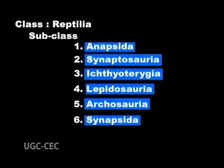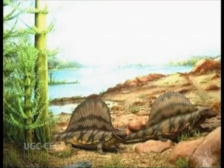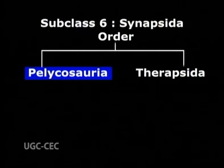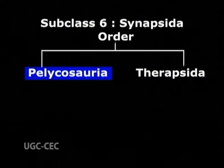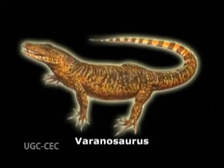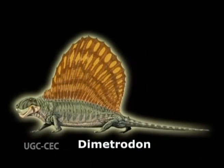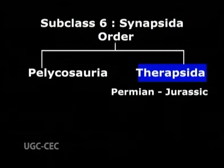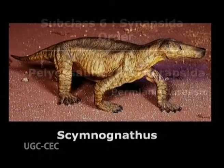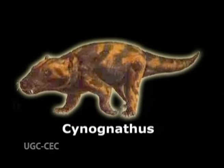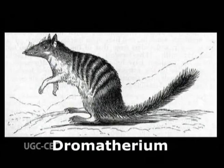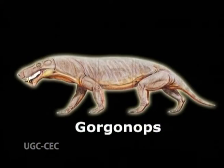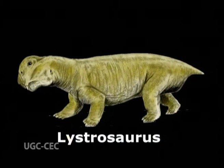Subclass 6, Synapsida, lived during Carboniferous to Permian and is classified into two orders: Pelicosauria and Therapsida. Order 1, Pelicosauria (Theromorpha). Examples are Varanosaurus, Edaphosaurus, and Dimetrodon. Order 2, Therapsida, Permian to Jurassic. Examples are Thrinaxodon, Cynognathus, Bauria, Dromatherium, Dicynodon, Gorgonops, Lystrosaurus, and Kannemeyeria.